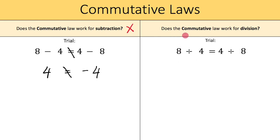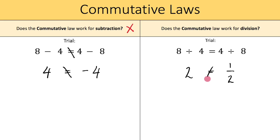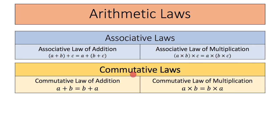Does the commutative law work for division? Does 8 divided by 4 equal 4 divided by 8? Well, 8 divided by 4 is 2, and 4 divided by 8 is one half. And 2 does not equal one half, which means the commutative law does not work for division. To recap: we have two commutative laws — the commutative law of addition and the commutative law of multiplication.